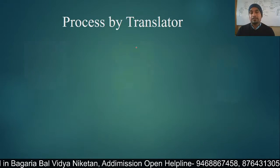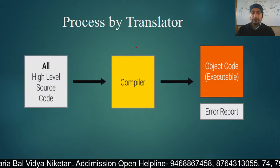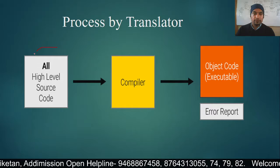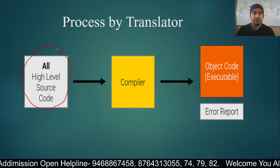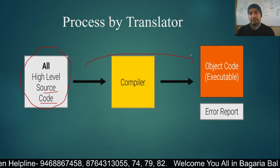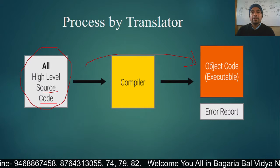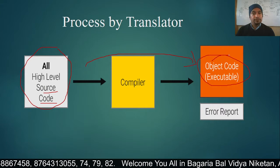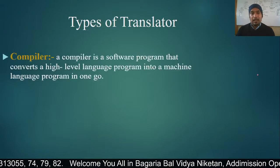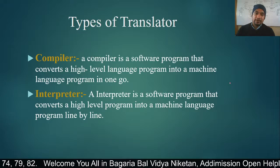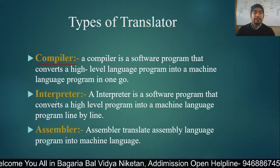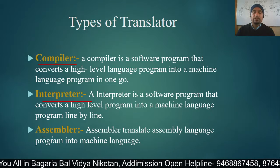There are three types of translators. The process is: the high-level language code, called source code, is changed into object code by the translator, and we call the result executable code. The three types of translators are: first, compiler; second, interpreter; and third, assembler.